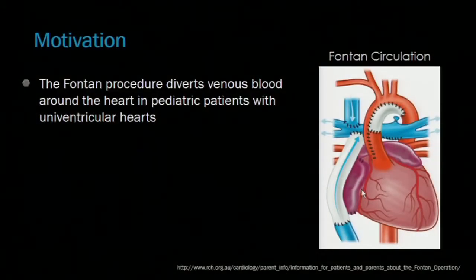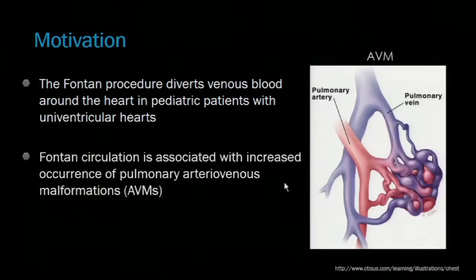The Fontan procedure is performed in children with congenital heart defects that result in only a single ventricle functioning. This operation routes venous blood from the IVC and the SVC directly to the pulmonary arteries, bypassing the right heart. The resulting Fontan circulation is associated with increased development of pulmonary arteriovenous malformations, or AVMs, where abnormal connections are made between the arteries and the veins, rather than the blood reaching the capillaries to be oxygenated.